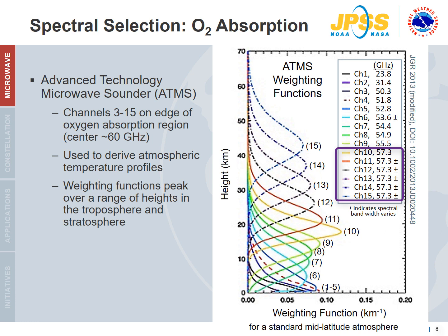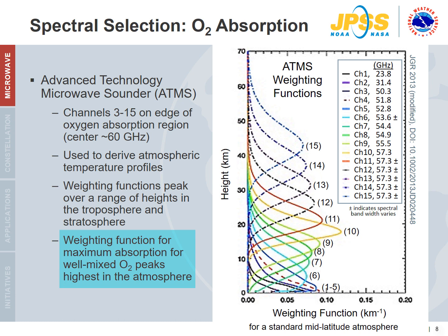Channels 10–15 are narrow and overlapping bands. The varying bandwidth is indicated with a plus-minus symbol. For more information, refer to the paper listed. The vertical resolution of the retrieved temperature profiles is dependent on the number, peak distribution, and sharpness of the weighting functions. Can you determine which channel presents the maximum absorption for oxygen? Hint: the weighting function for maximum absorption for well-mixed oxygen peaks highest in the atmosphere.